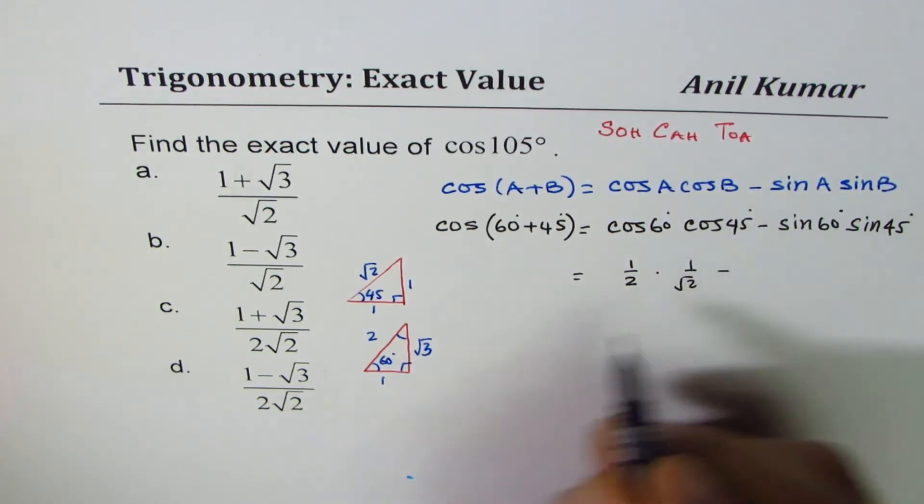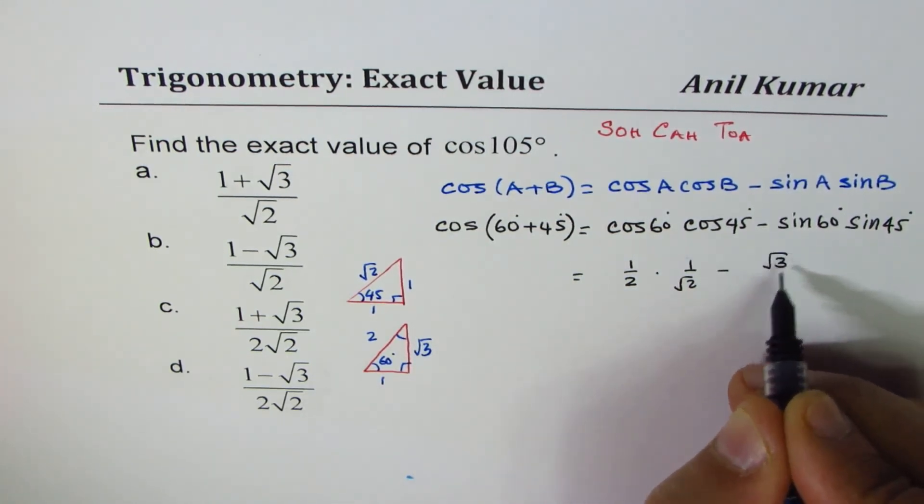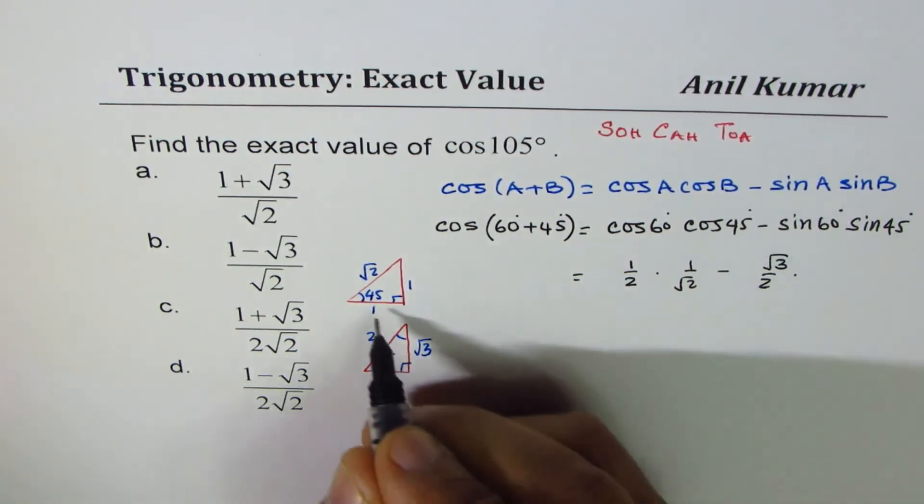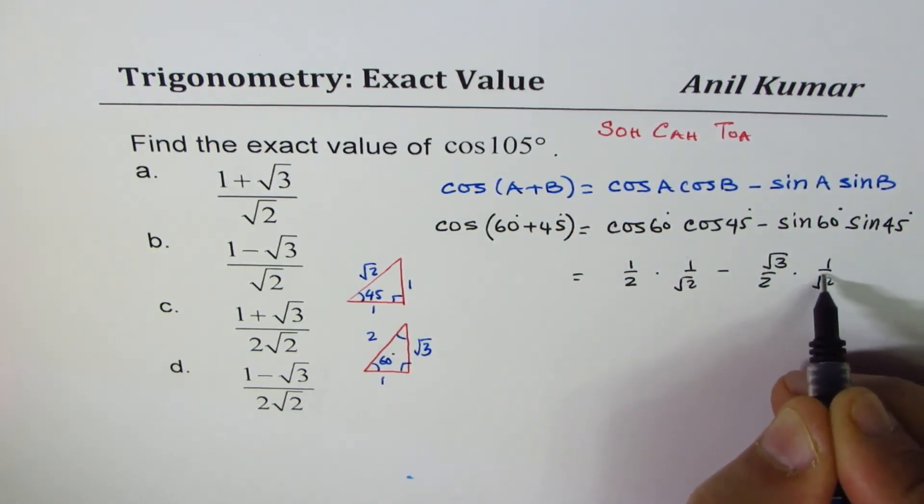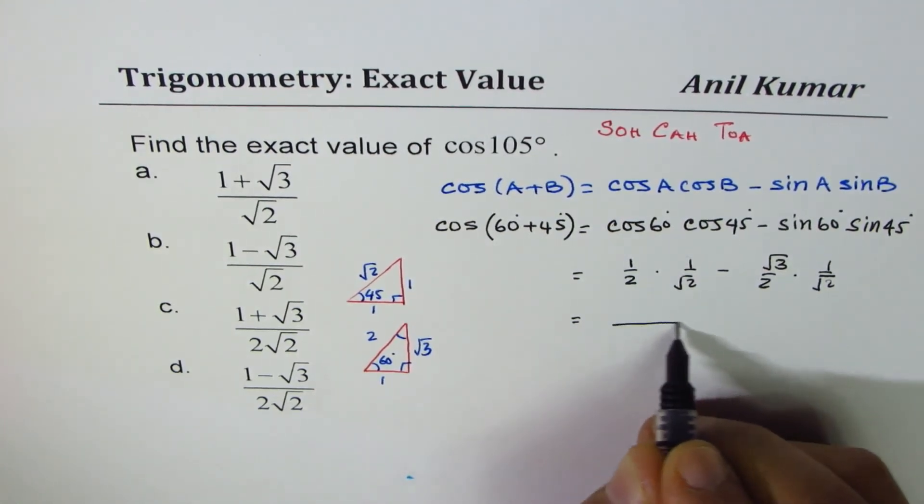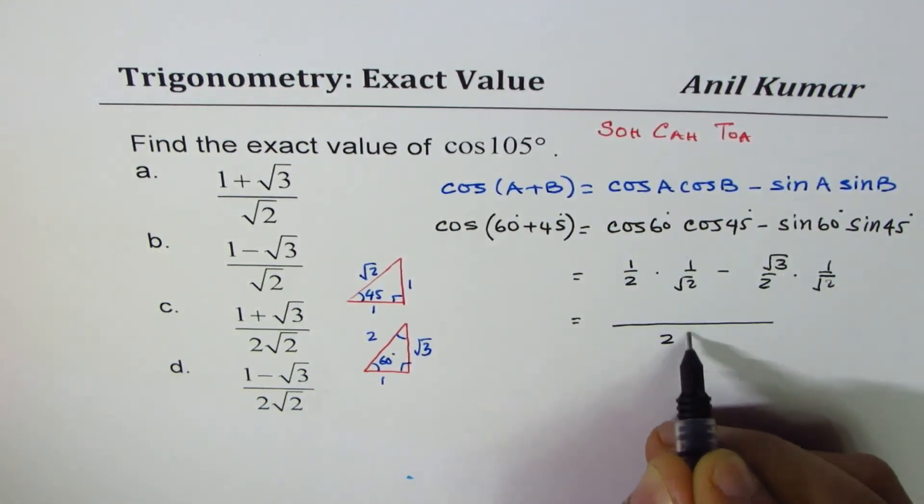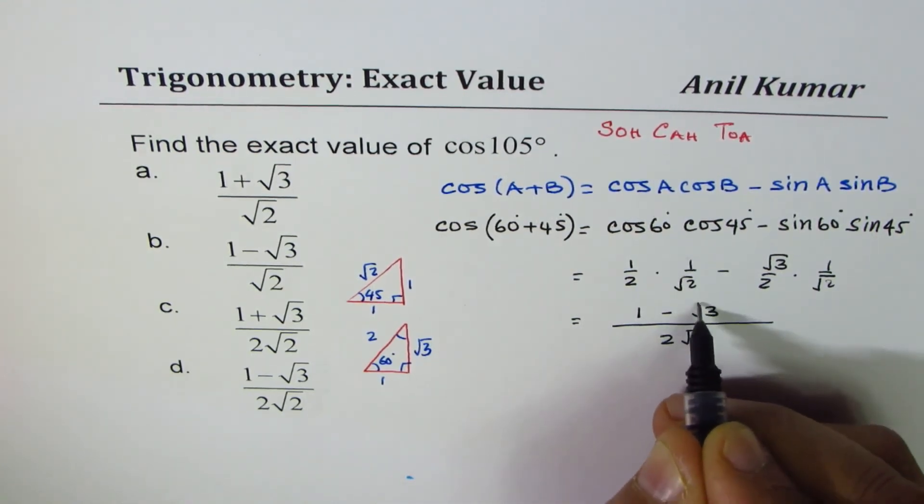Minus sin 60, that triangle opposite over hypotenuse, is square root 3 over 2. Sin 45, opposite over hypotenuse, is 1 over square root 2. Now if you add them up we have 2 square root 2 in the denominator and the numerator is 1 minus square root 3.